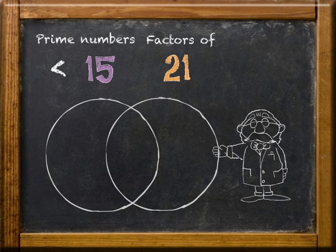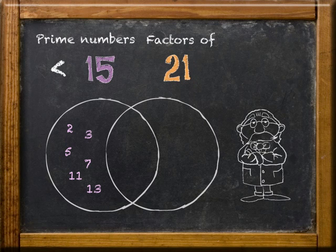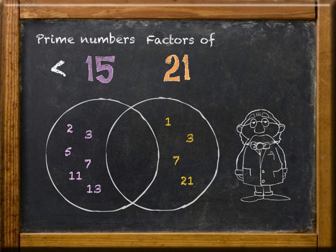How'd you do? Prime numbers less than 15 are 2, 3, 5, 7, 11, and 13. Factors of 21 are 1, 3, 7, and 21. The shared numbers are 3 and 7. These should be inside the overlapping area.